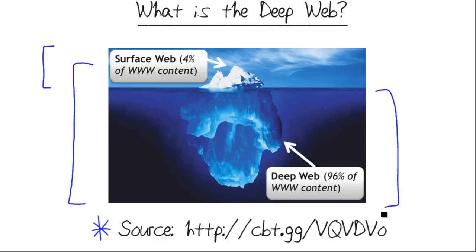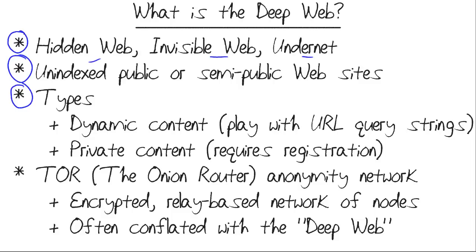You might be thinking, what can I find down here that I can't find up here? The types of content here — we're not necessarily talking about cloak and dagger, CIA, government operations, dark ops, black ops kind of stuff. We're simply talking about content that, for various reasons, isn't scoured by search engines.